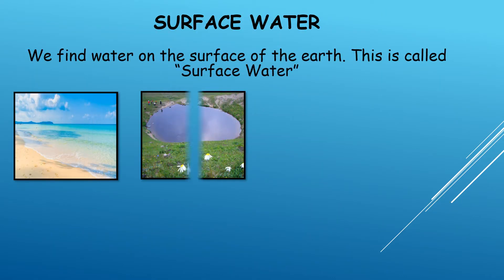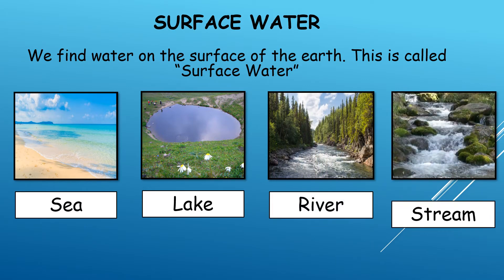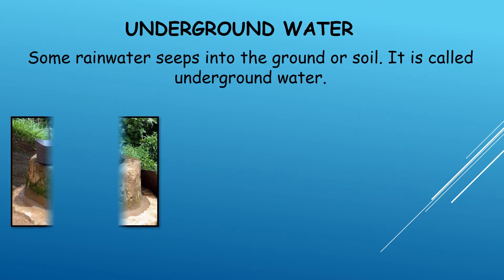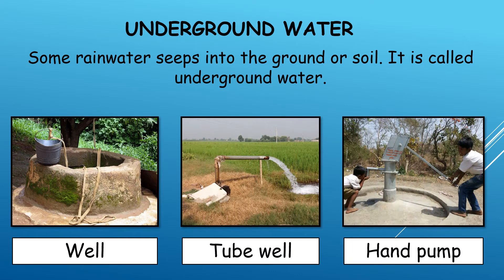Sources of water exist in two forms: surface water and underground water. Surface water is water found on the surface of the earth, like seas, lakes, rivers, and streams. Underground water is when rain water seeps into the ground or soil. In villages, wells, tube wells, and hand pumps use underground water.